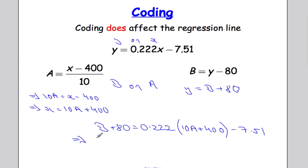That implies b plus 80 equals. Now I've got to do 0.222 times 10a which is going to give me 2.22a plus and 400 times by 0.222 is 88.8 subtract 7.51.